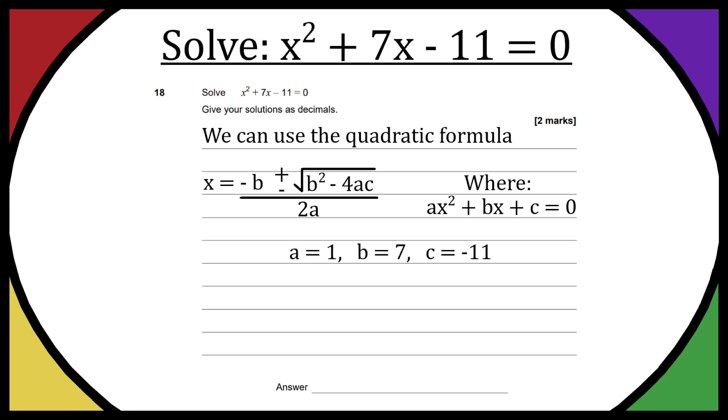In this case, a = 1 because we just have x² by itself, b = 7 because we have 7x, and c = -11 because we just have -11 there by itself. This is obviously all equal to 0.